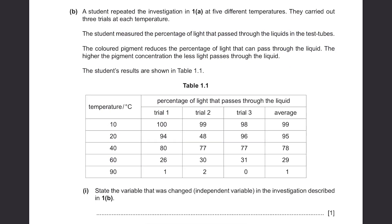Part B: A student repeated the investigation in question 1a at 5 different temperatures. They carried out 3 trials at each temperature. The student measured the percentage of light that passed through the liquids in the test tubes. The colored pigment reduces the percentage of light that can pass through the liquid. The higher the pigment concentration, the less light passes through the liquid. The student's results are shown in table 1.1. The 5 different temperatures are shown here, and 3 trials and the average at the last column. And these just show the percentage of light that passed through the liquid. And you can see that overall they are decreasing as the temperature increases, meaning at higher temperatures, the pigment concentrations were very high.